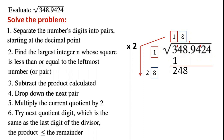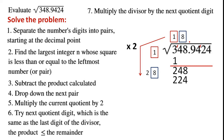Now we try to find the next largest quotient digit that is the same as the last digit of the divisor, such that the product is less than or equal to the remainder. We try 9: 29 times 9 is greater than 248. We try 8 and write 8 here. 28 times 8 is 224. Now we go back to step 3: 248 minus 224 is 24.